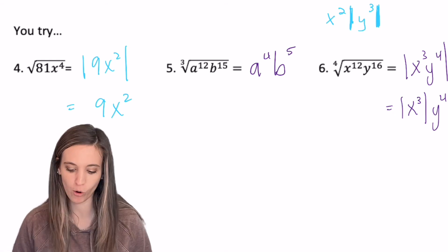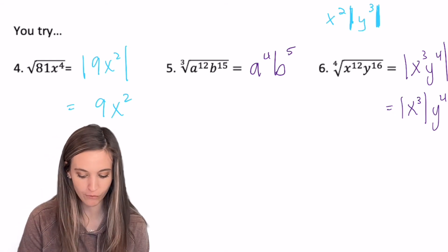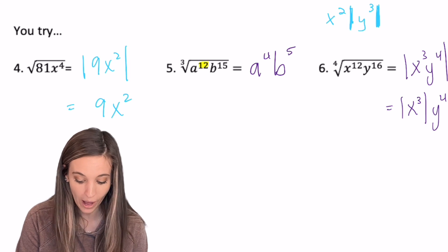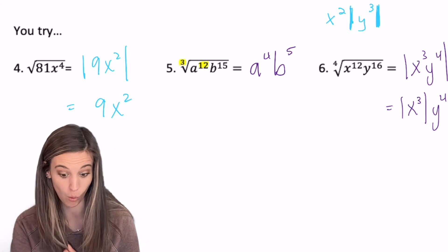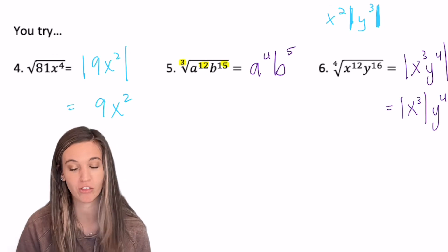Number five, I have a to the fourth, b to the fifth. Well, where'd that a to the fourth and b to the fifth come from? a to the 12th, and I take the cube root. So 12 divided by three, four, and then 15 divided by three, five.